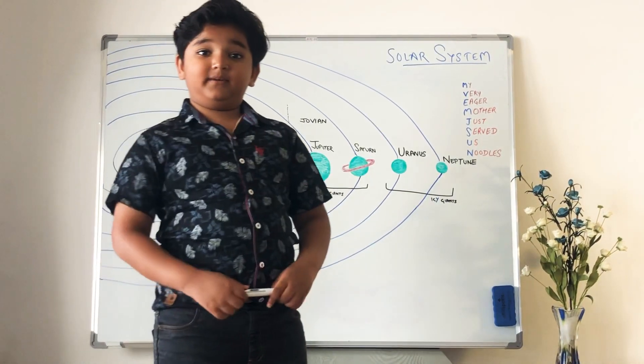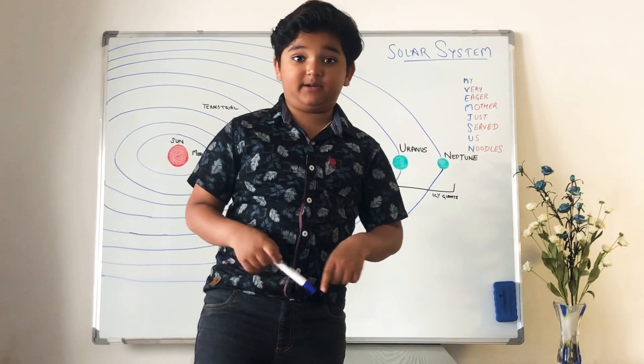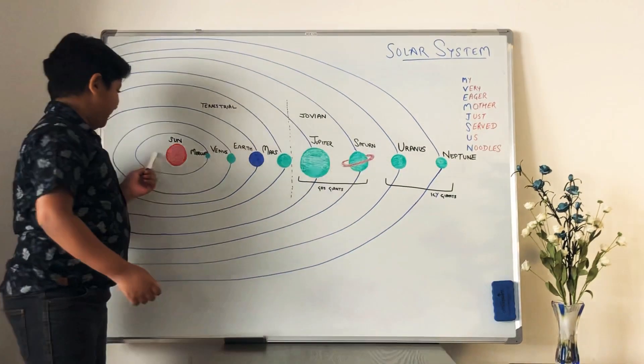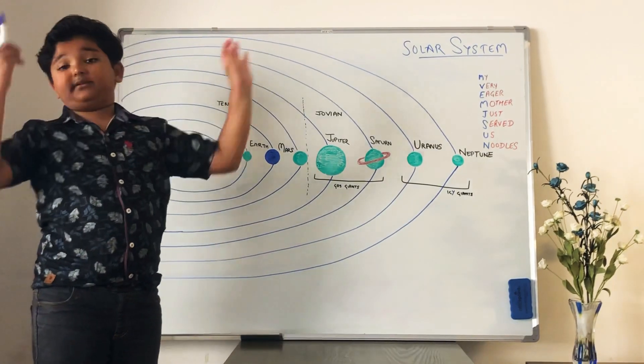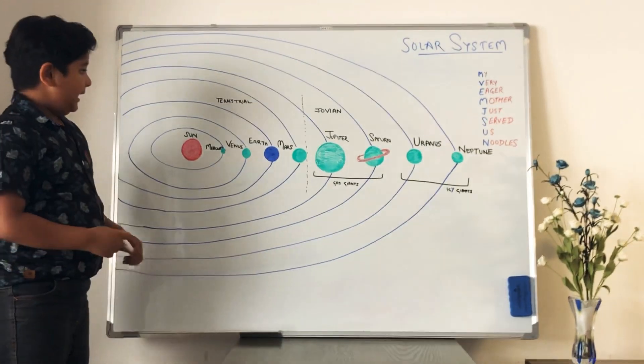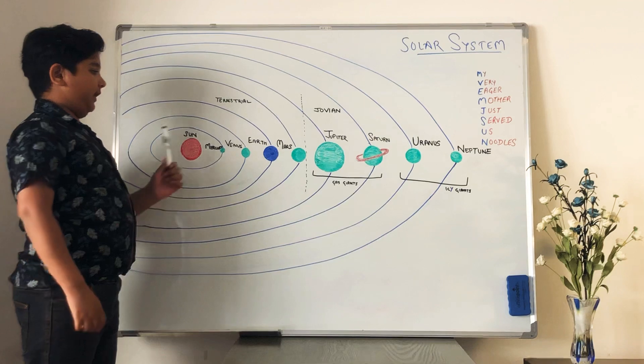And the Sun is the main star in our solar system. Look, it is the main star in our solar system because it is super bright in the sky. And there are 8 planets that revolve around the Sun.